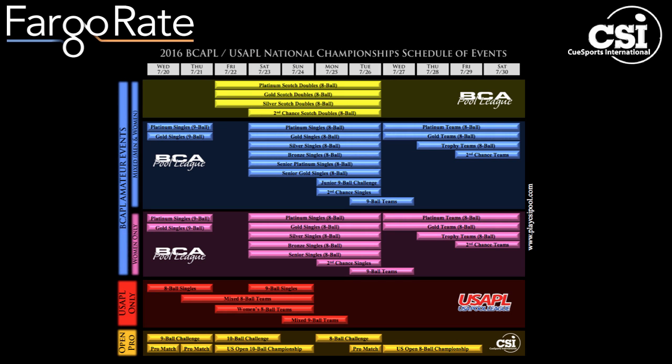The playcsipool.com website has this very nice graphic that shows all of the events — whether they overlap, when they start, when they finish, and who's eligible to play. Detailed guidelines for each event can be found at the playcsipool.com website by clicking on the entry form for an individual event.